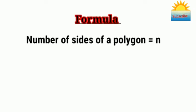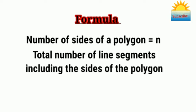Let the number of sides of a polygon be n. Then the total number of line segments, including the sides of the polygon, is n(n-1)/2.